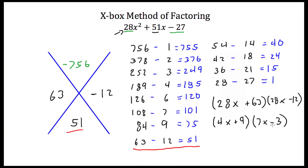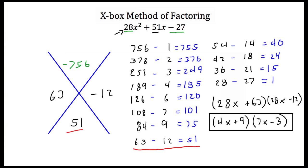I can't reduce these any further. So the final factors of 28x squared plus 51x minus 27 are (4x plus 9)(7x minus 3). If you take 4x and multiply it by 7x, you'll get 28x squared. 9 and negative 3 will give you negative 27. And through FOILing, you'll find that you'll end up with 51x. Reducing your binomials is the last step, and that's how you use the Xbox method of factoring.